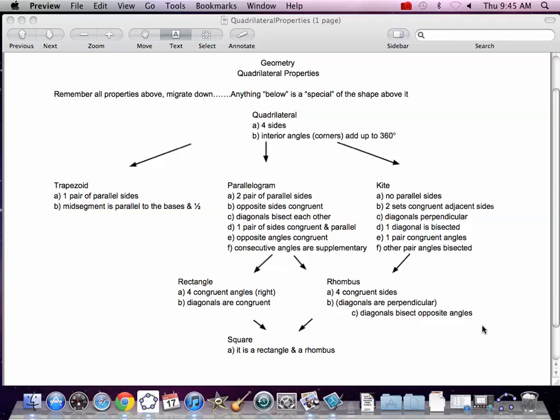So there are two sets of congruent adjacent sides. That means the sides next to each other are the same, but the other two sides are also the same, just not the same as that. You know what a kite looks like. And a diagonal is perpendicular. We know how to make a perpendicular. So we're going to make a perpendicular, and that's going to be our diagonals.